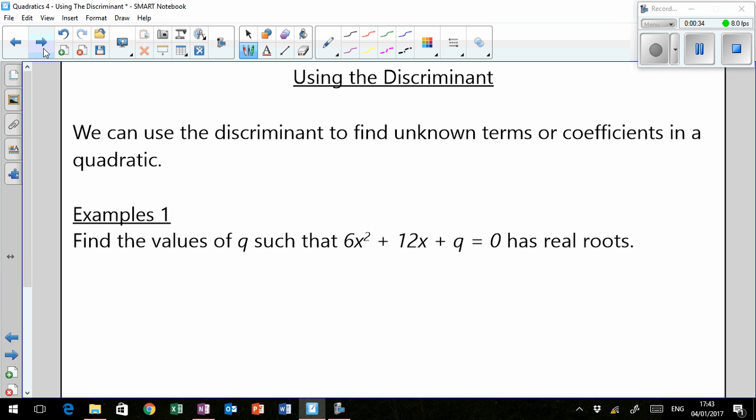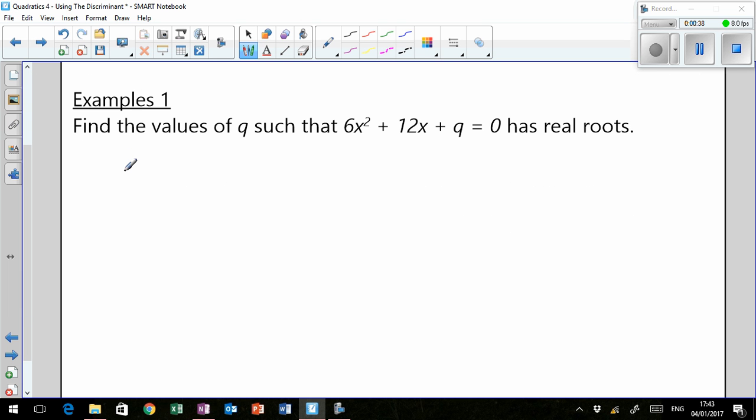This one's just going to be three examples. In that first example, find the values of Q such that 6x² + 12x + q = 0 has real roots. We're not asked to find out about the nature of the roots, we're told that in this situation, we know they're going to be real. Now, the first trick here is, for real roots, there's two options.